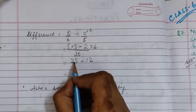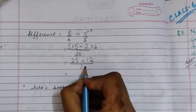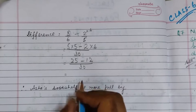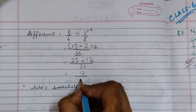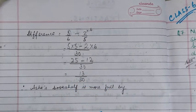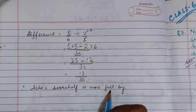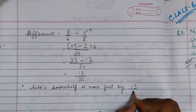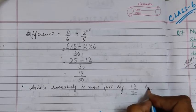So we get 25 minus 12 by 30. 25 minus 12 is equal to 13. So it will be 13/30. Therefore, Asha's bookshelves is more full by 13/30, and this will be the answer.